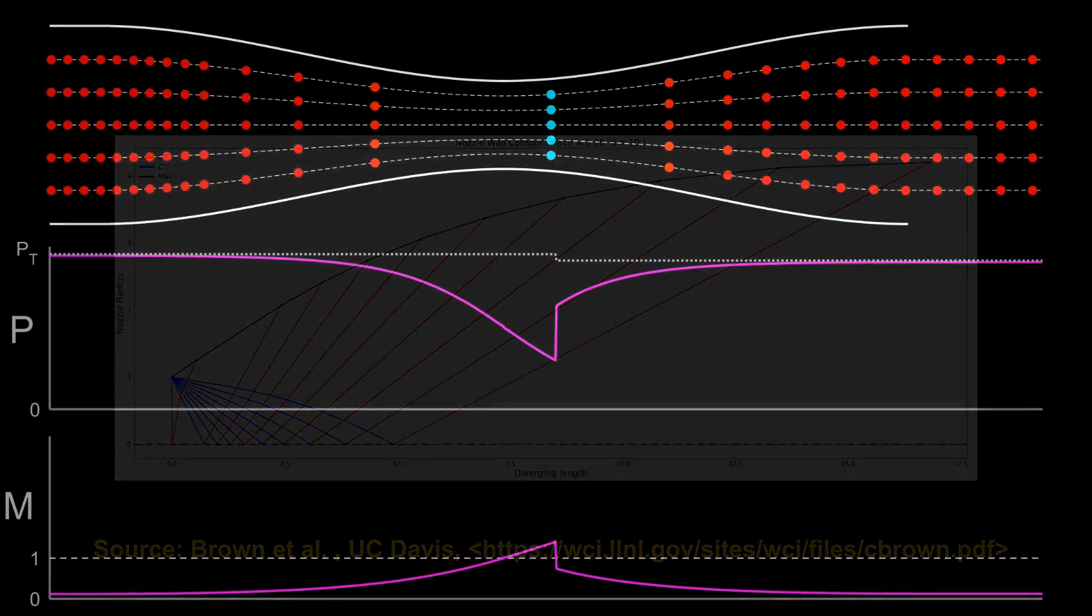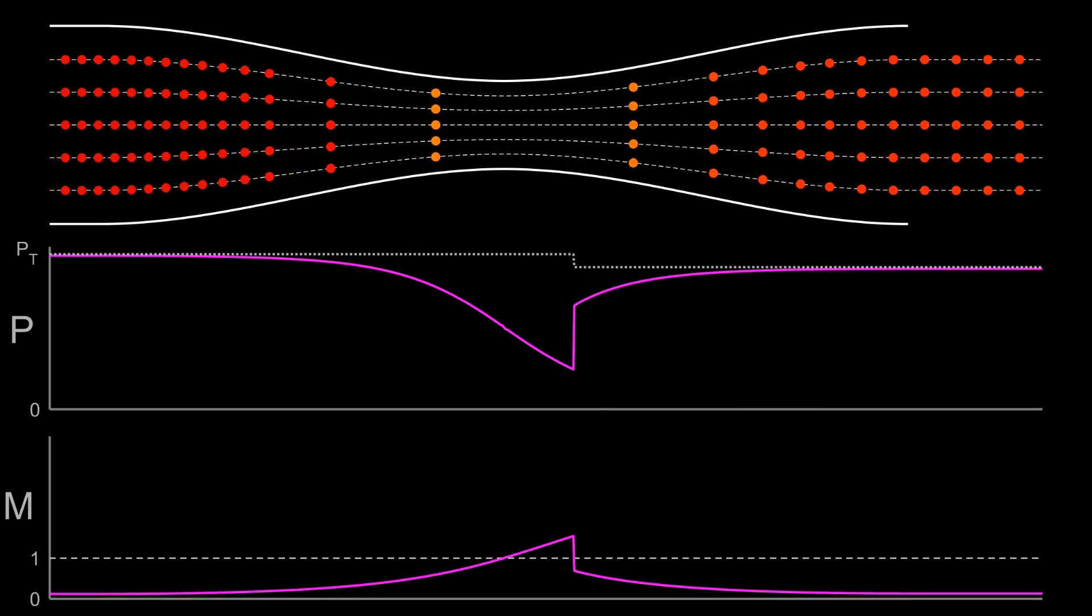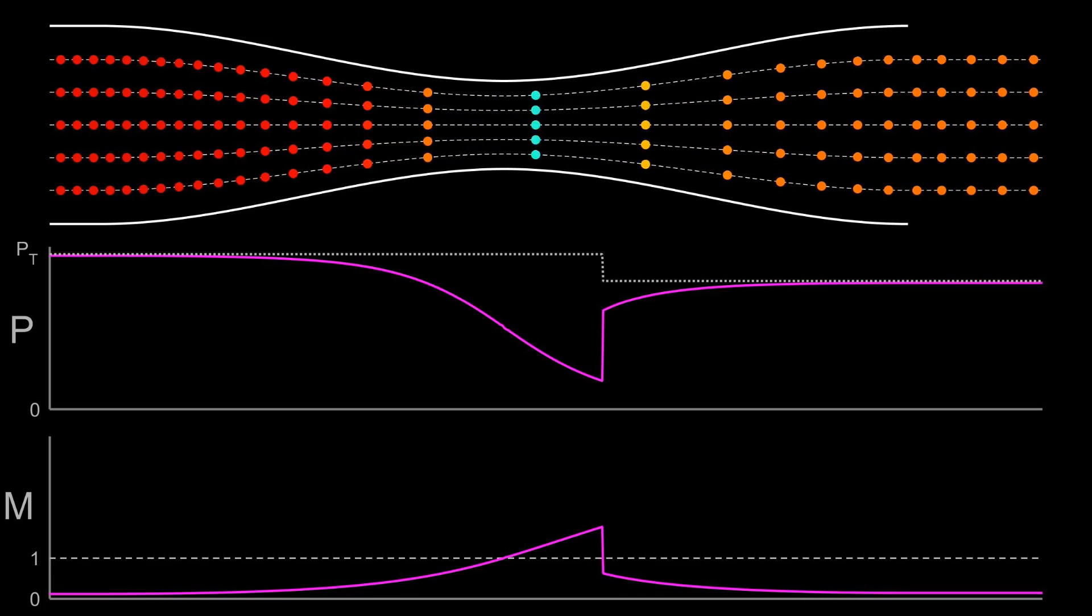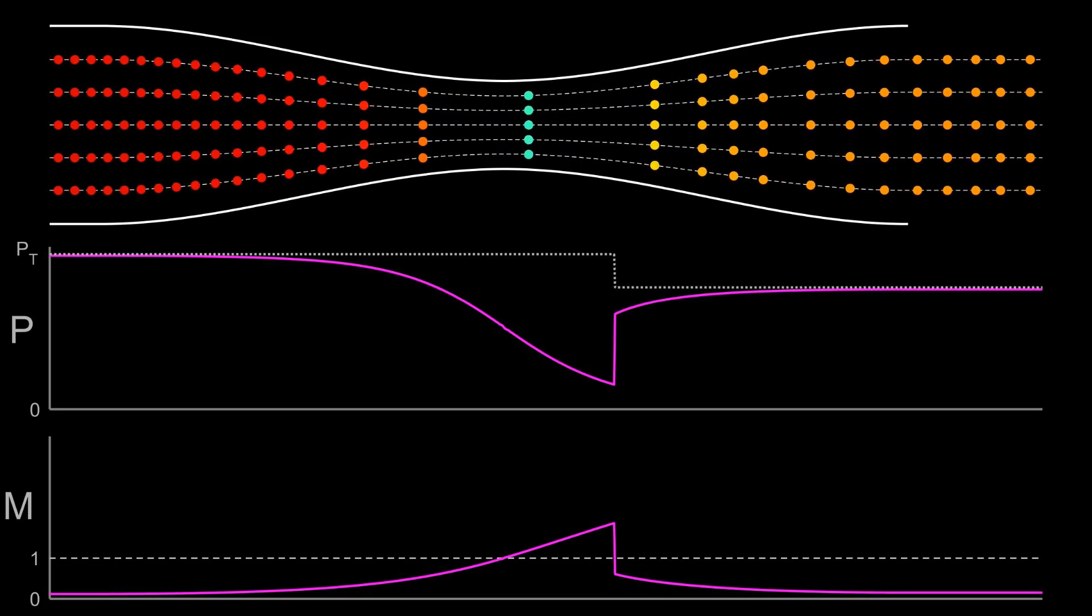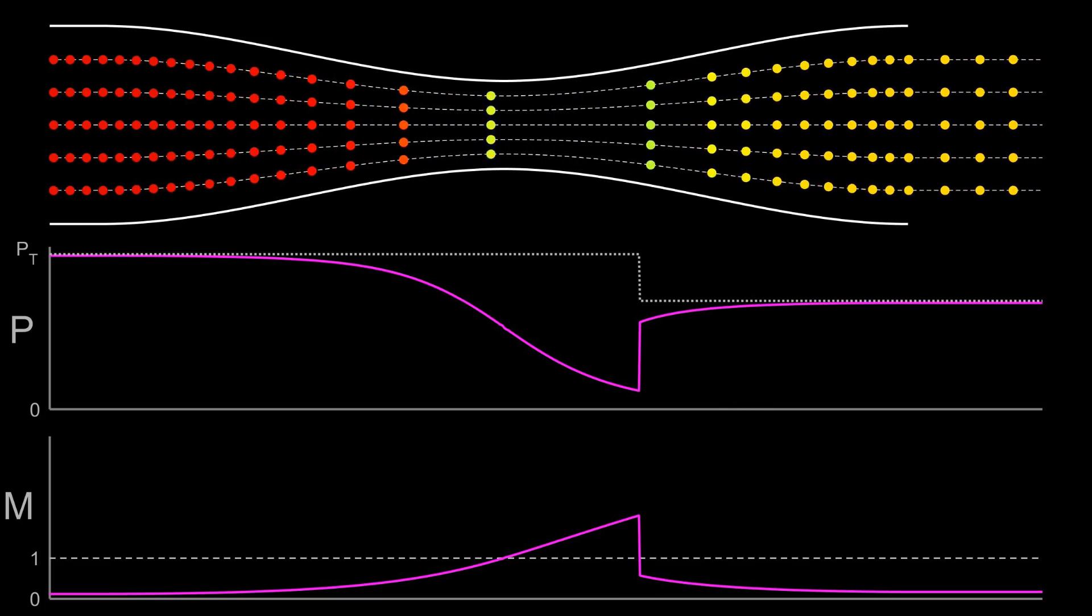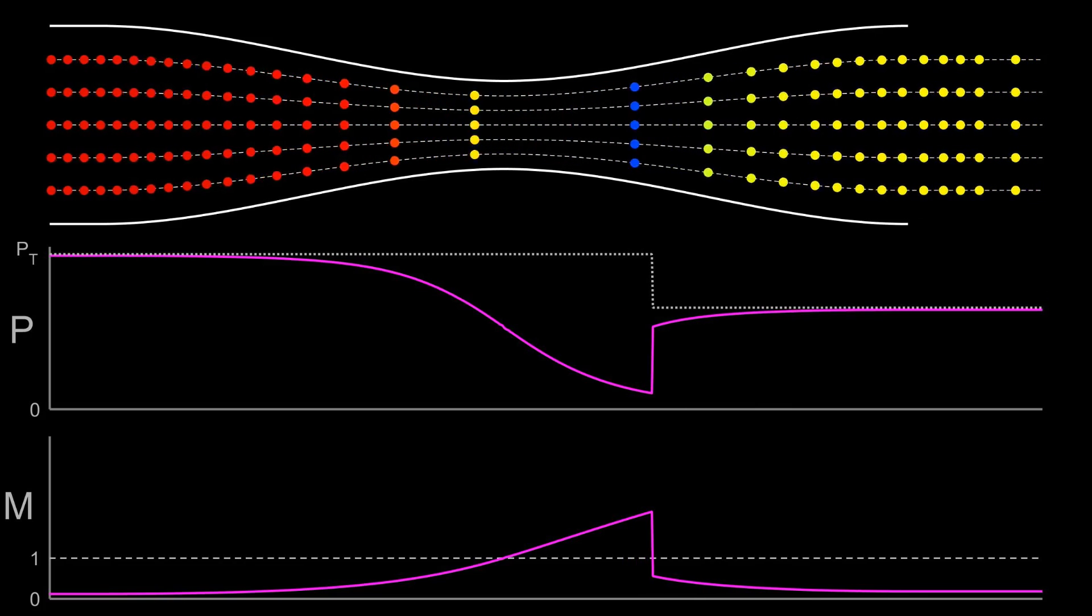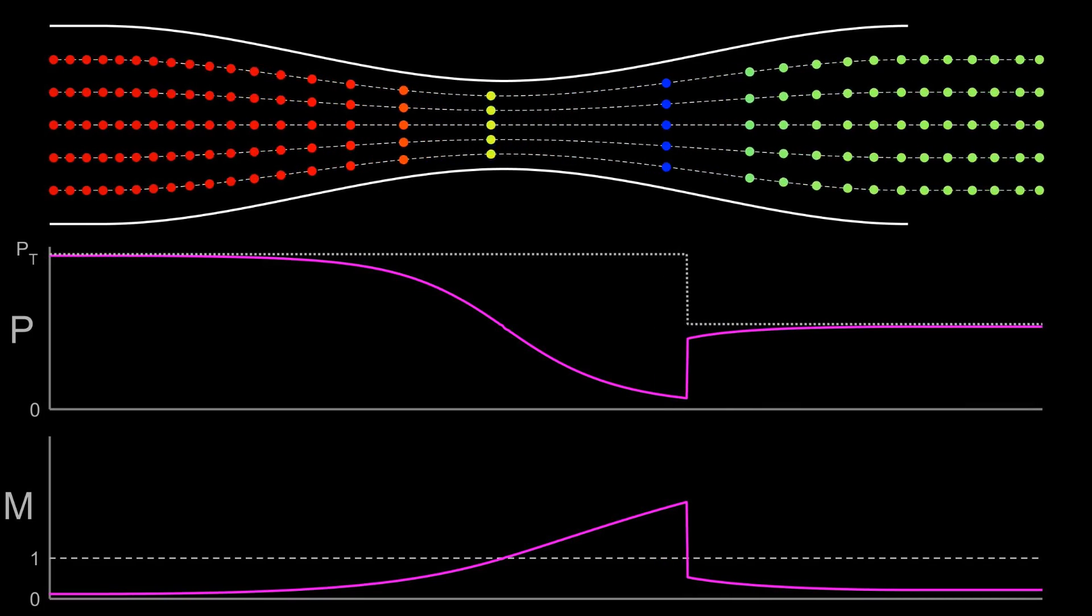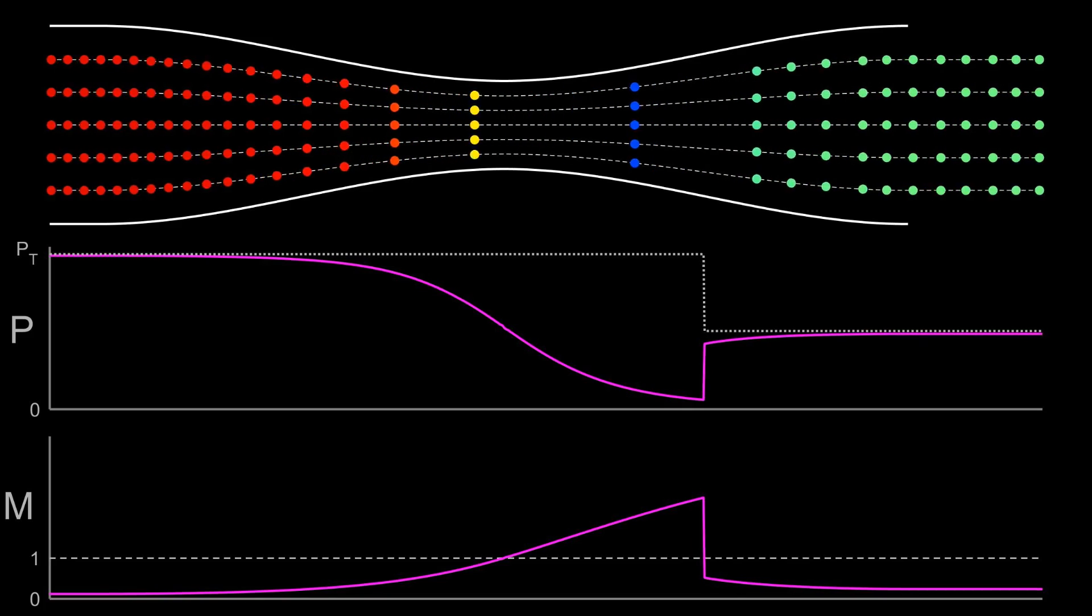Let's briefly return to the subsonic-supersonic transition animation. Initially, a small region of supersonic flow develops, but then something strange happens. There's a large increase in pressure and a large drop in Mach number, and this happens almost instantaneously at a certain point in the nozzle. As the pressure gets lower, this point gets closer towards the end of the nozzle. This strange effect is a normal shock.